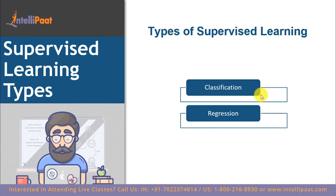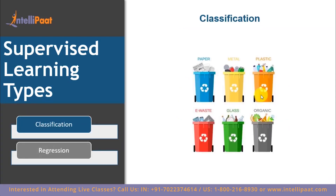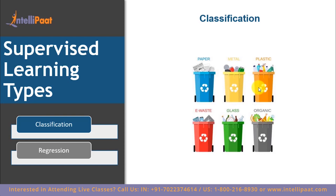Supervised learning can be divided into classification and regression. Classifying input data is a very important task in machine learning — for example, whether a mail is genuine or spam, or whether a transaction is fraudulent or not. Let's say you live in a gated housing society with separate dust bins for different types of waste: one for paper waste, one for metal waste, one for plastic waste. What you're doing here is classifying waste into different categories. Classification is the process of assigning a class label to a particular item.